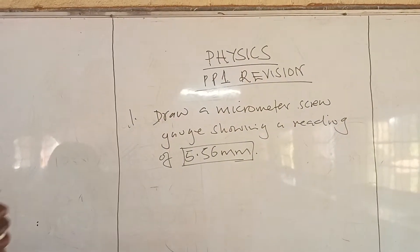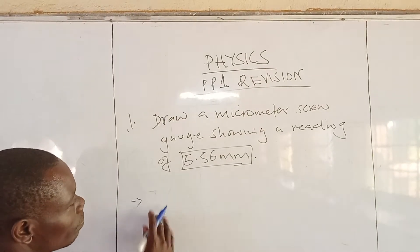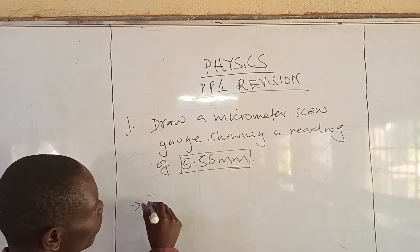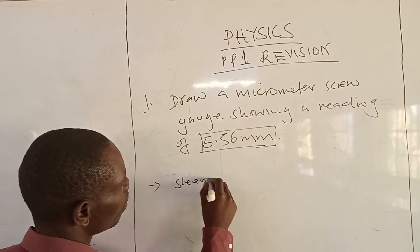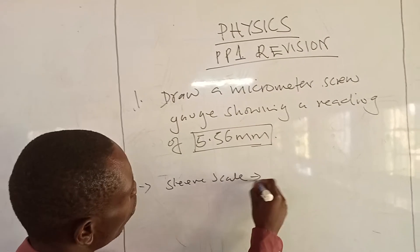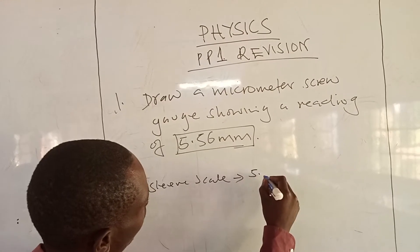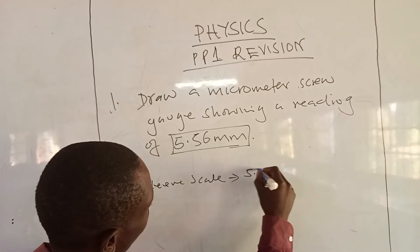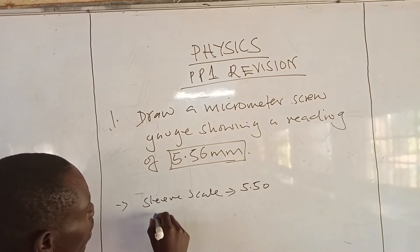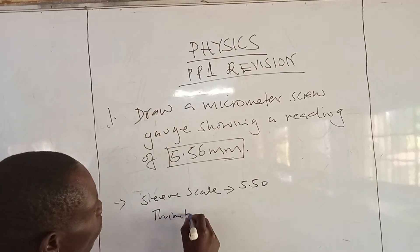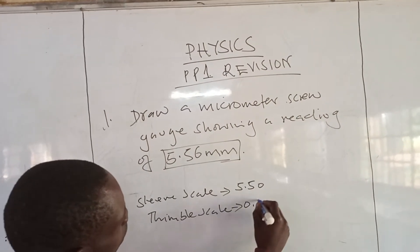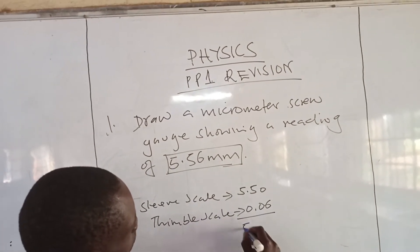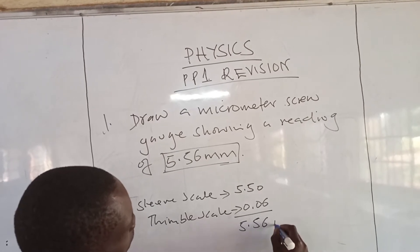Now from our reading, we can have the sleeve scale of 5.50 and then a thimble scale of 0.06 to give us 5.56 millimeters.